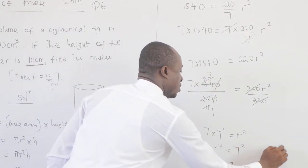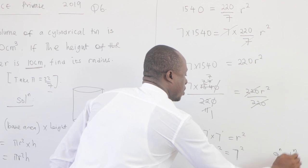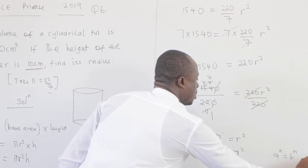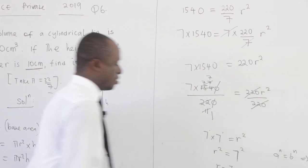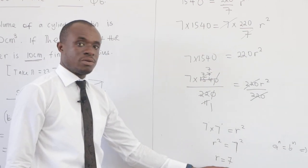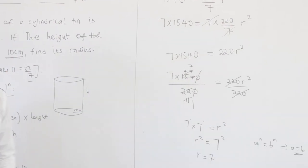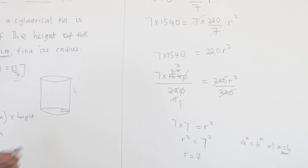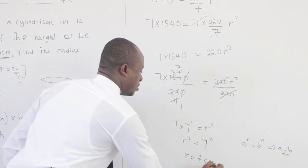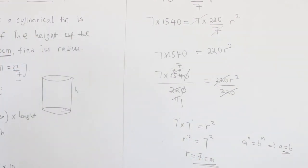That is, if you have a to the power n equal to b to the power n, we see that a equals b. So clearly we can say r is equal to 7. And don't forget to add the unit - 7 centimeters.